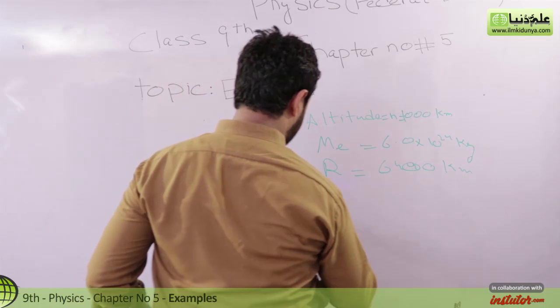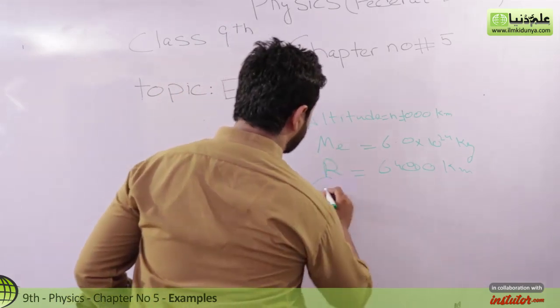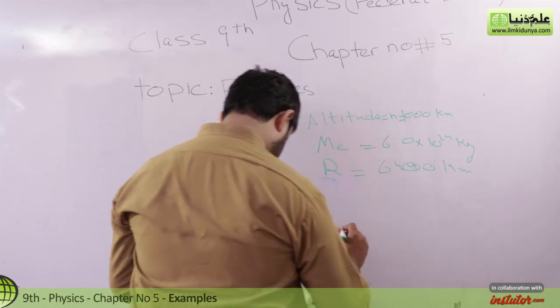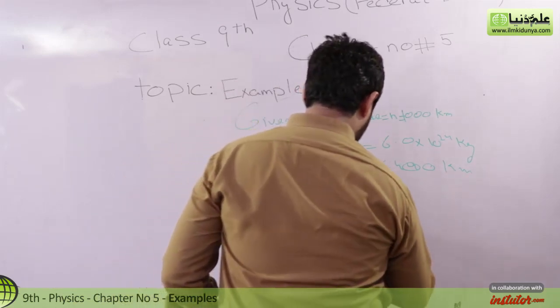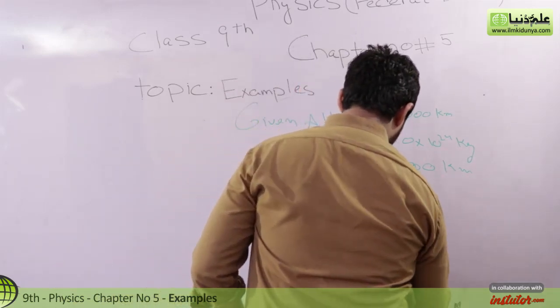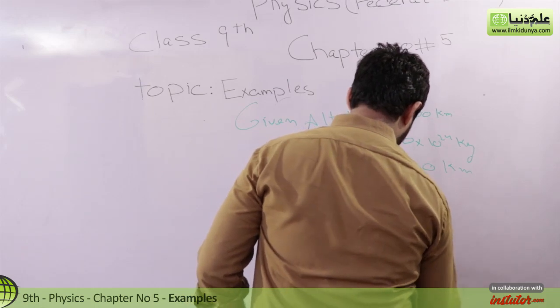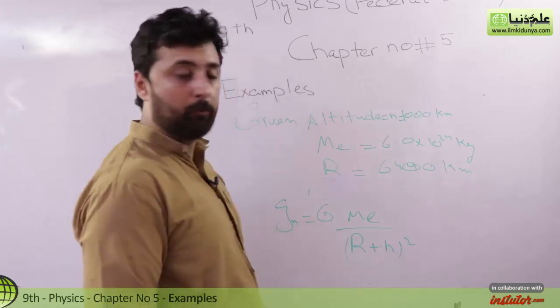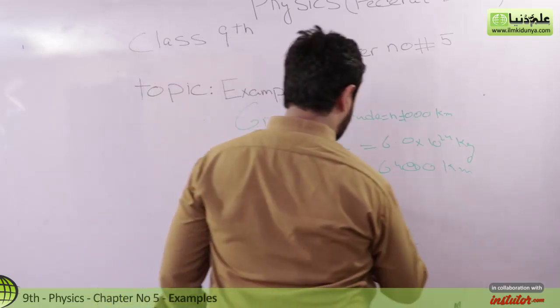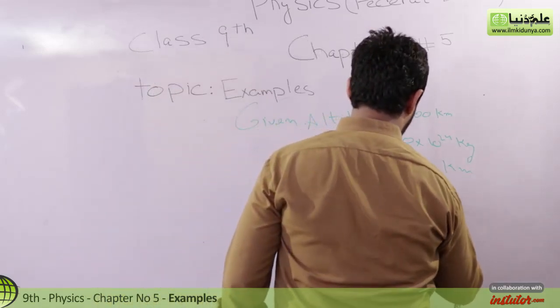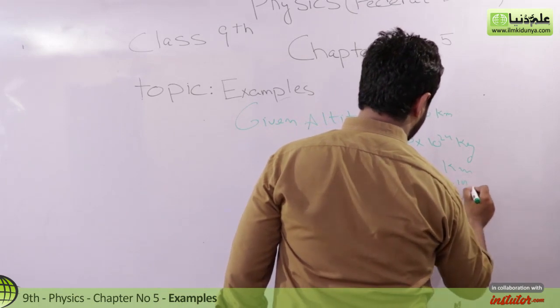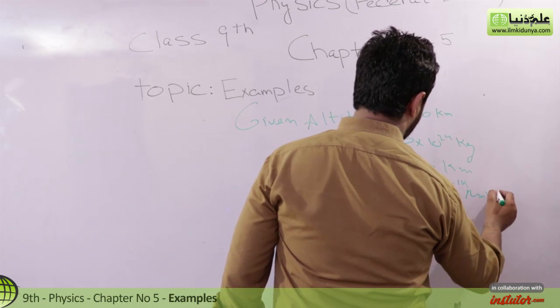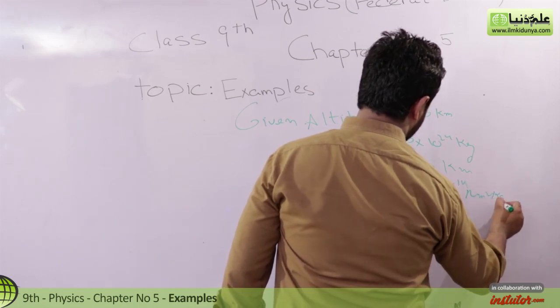G at height H. Okay, the gravitation formula you can see. G times mass of the earth divided by R plus H square. You can see G's value. 6.673 multiplied by 10 raised to power minus 11 Newton meter square per kilogram square.